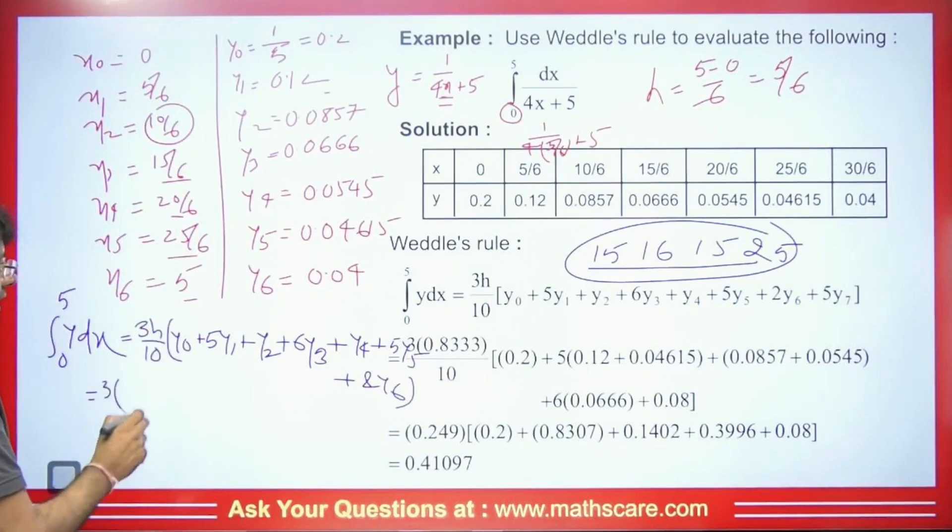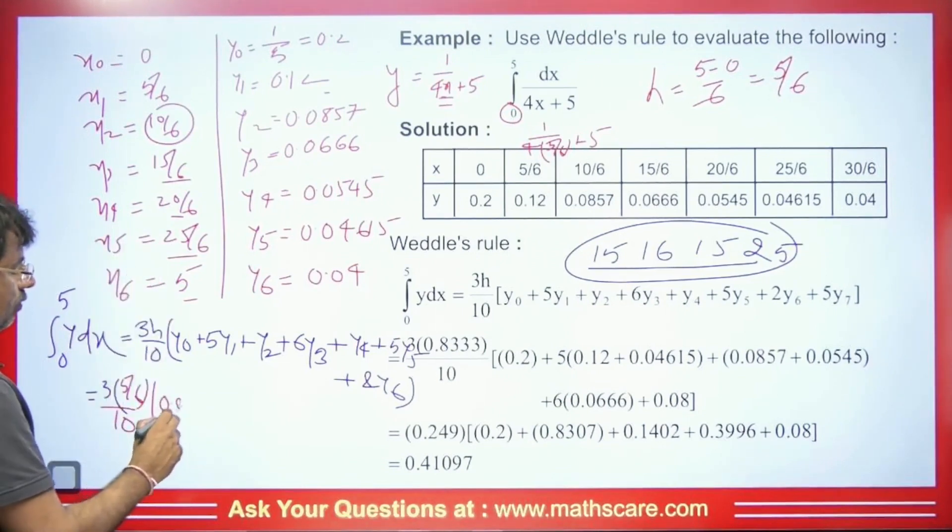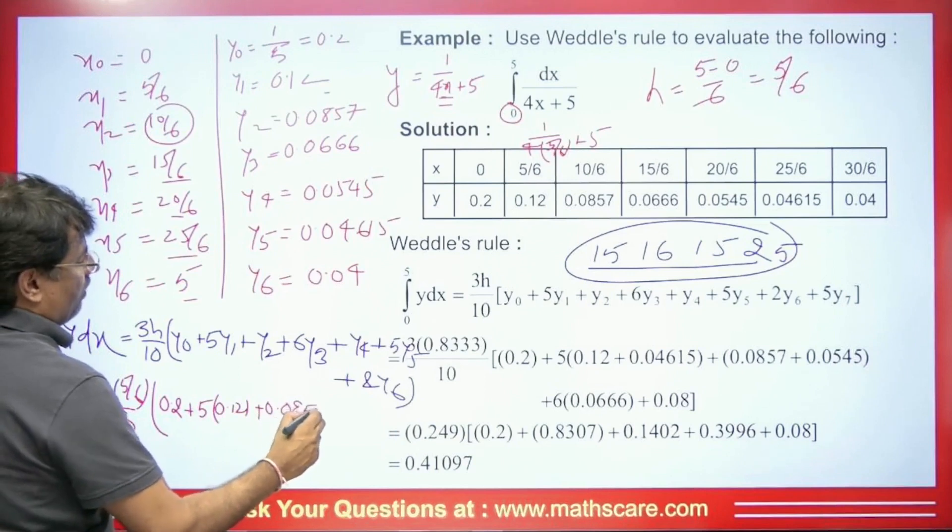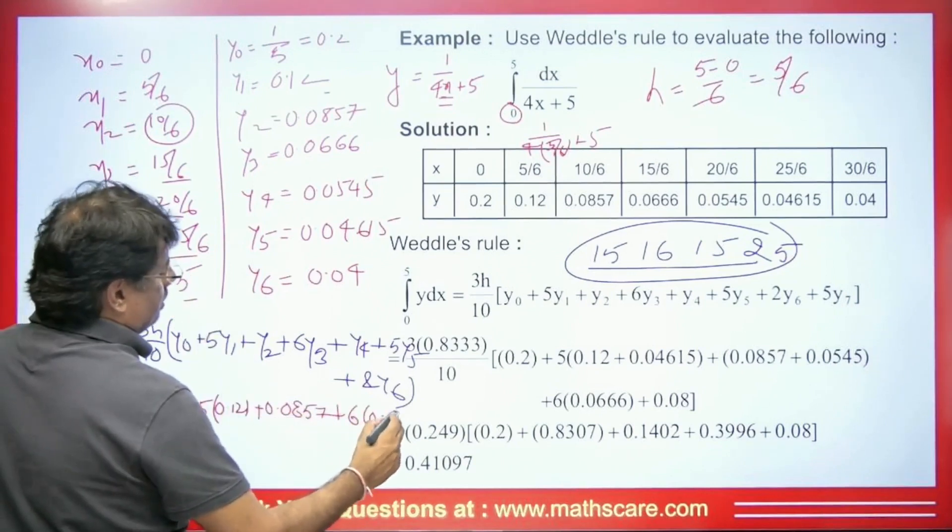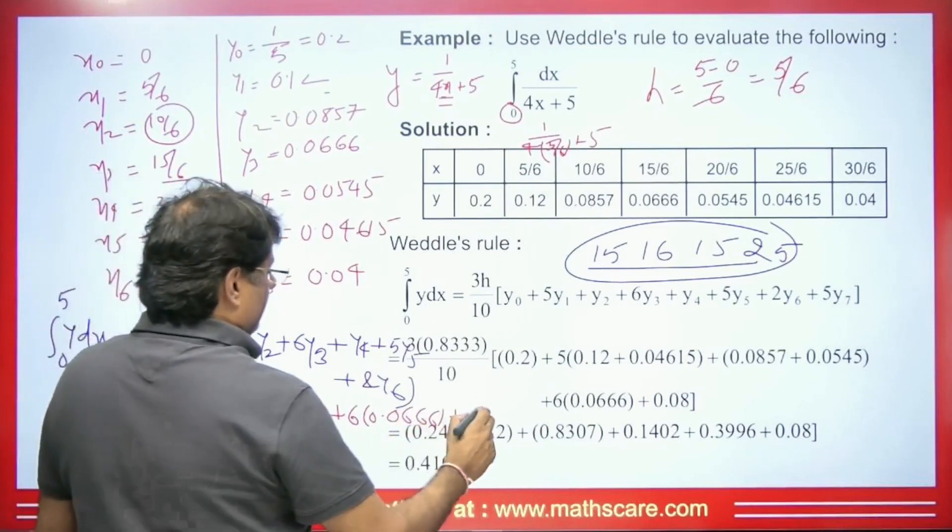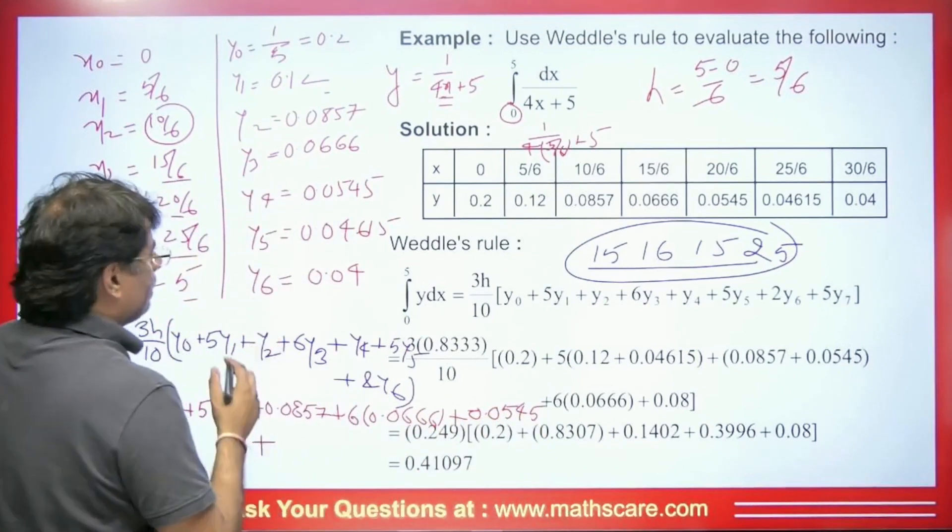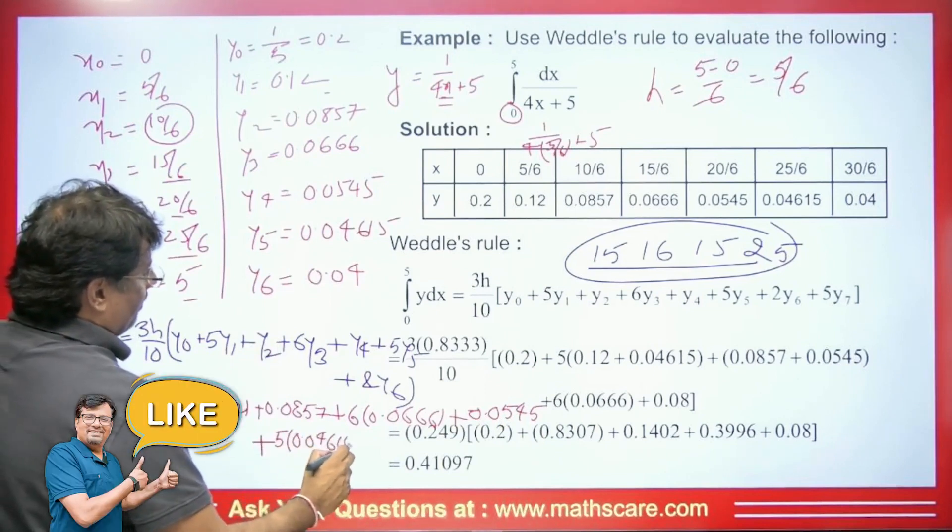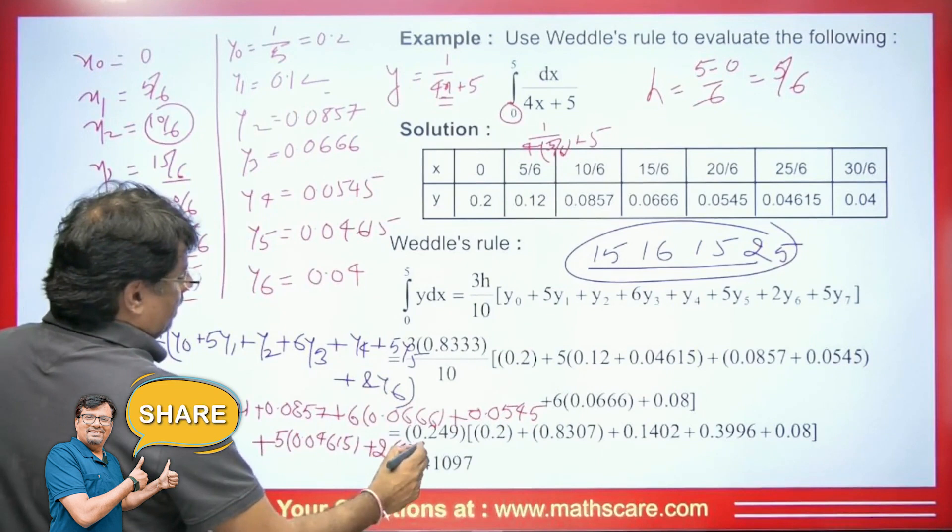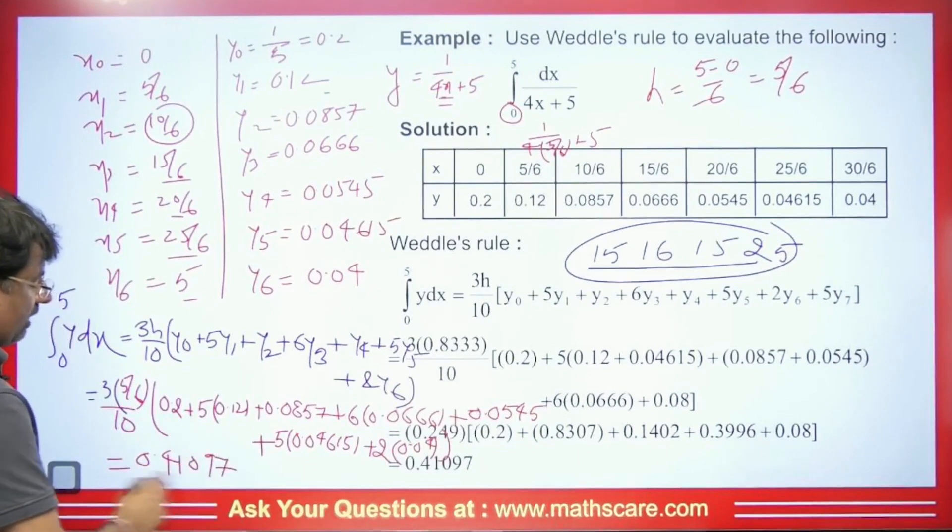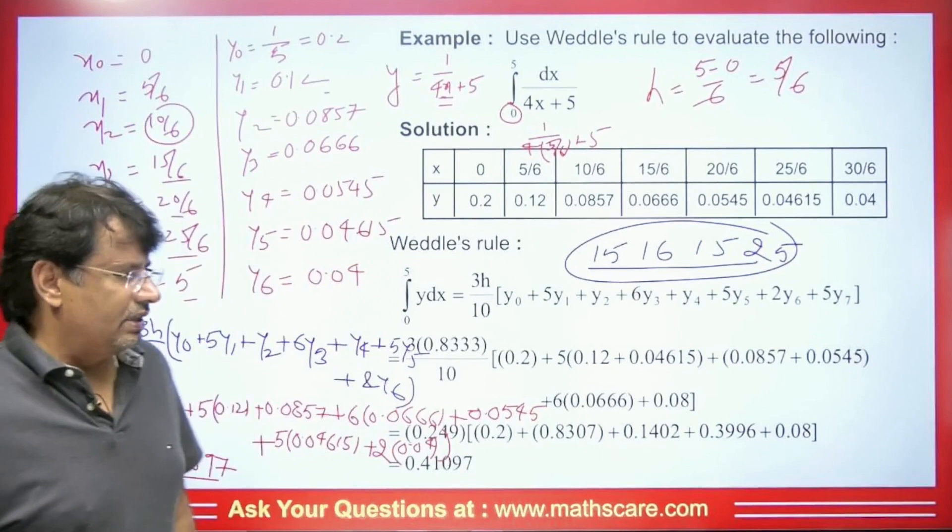Put all these here. It will be 3. While the value of h here will be 5/6, and this will become 5/6 by 10. And y₀, the value of y₀ will be 0.2 + 5·y₁. Hence this will be 0.12 + y₂, and this will be 0.0857. Then plus this will be 6y₃·0.0666. Plus we will get y₄, and the value of y₄ will be 0.0545 and plus 5y₅. Hence it will be plus 5·0.04615. Now plus we have 2·0.04. And when we simplify it here with the help of calculator, brackets closed. Therefore, the value here will be 0.41097. And this will come as its integration value. Thus, as you can see, we can easily find its value here.